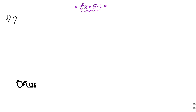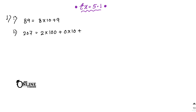Write the following numbers in generalized form. For 89, the generalized form is 8×10 + 9. For number 207, since 2 is in the hundreds place: 2×100 + 0×10 + 7. For 369: 3×100 + 6×10 + 9.